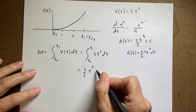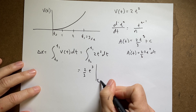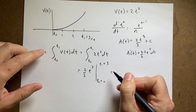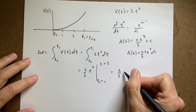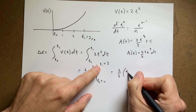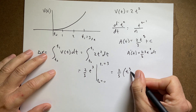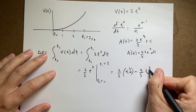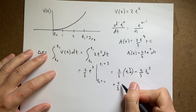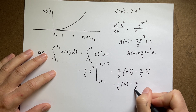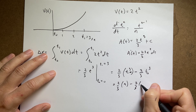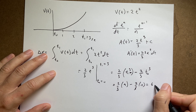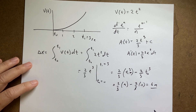I do need to evaluate the limits of integration: t₀ = 0, t₁ = 3. I get (2/3)(3³) minus (2/3)(0³), which is (2/3)(27) minus 0. That gives 18/3 = 6. So delta x equals 6 meters — and that's my answer.